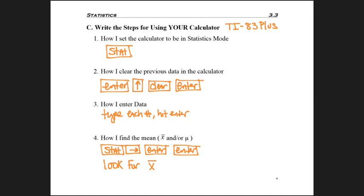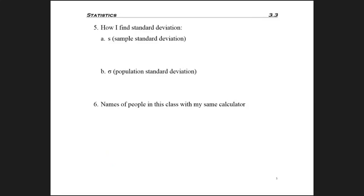Next, when I want to find S, the sample standard deviation, again that's on my display. For me it's listed as S sub X. So even if everything's displayed, write what symbol you're looking at. For population versus sample standard deviation, I have to look for sigma sub X.